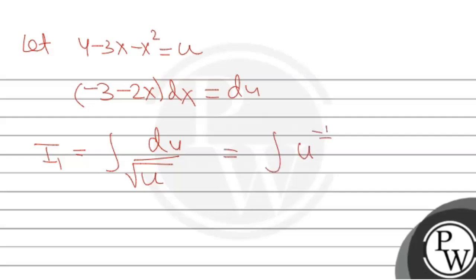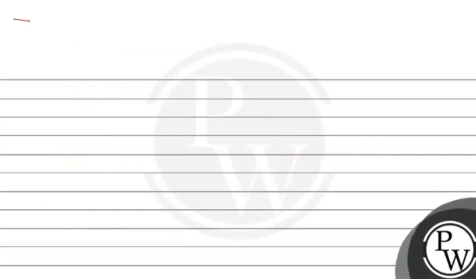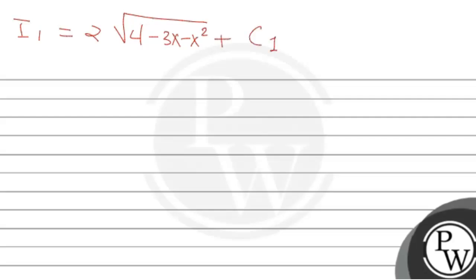With substitution u = 4 - 3x - x², we get 1/√u, which is u to the power of minus 1/2. Applying the power rule for integration, we get u^(1/2) upon (1/2) plus C1, where C1 is the constant of integration. Substituting back, I1 = 2√(4 - 3x - x²) + C1.